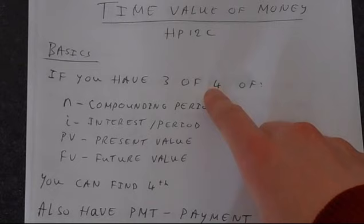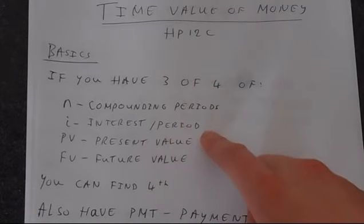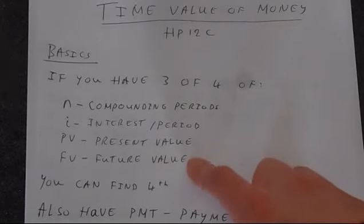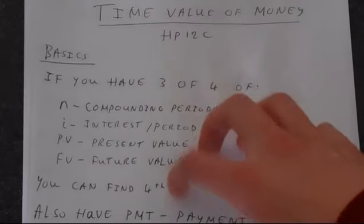If you have three out of four of these, you've got N as your compounding period, I as your interest rate per period, present value is PV, and your future value is FV. These are on the top line of your calculator and are probably the most used functions. If you have three of these, you can find the other.